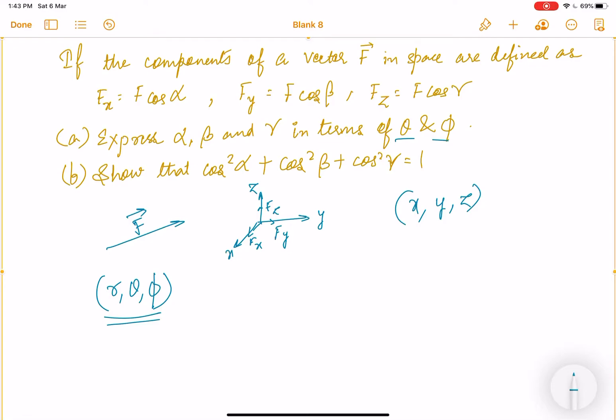If we see this, what is x equal to? I will say it's r sin theta cos phi. y is equal to r sin theta sin phi. And z is equal to r cos theta. Now if I compare this with what is given to me, f cos alpha, then this one is f cos beta, then next is f cos gamma.